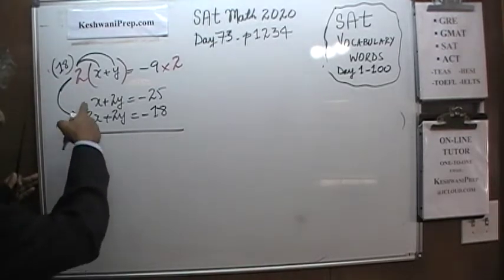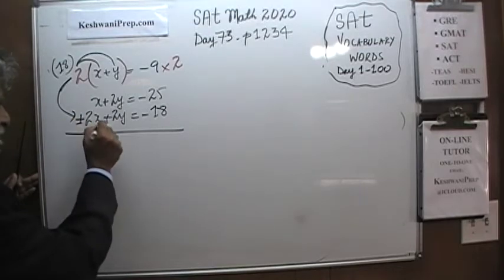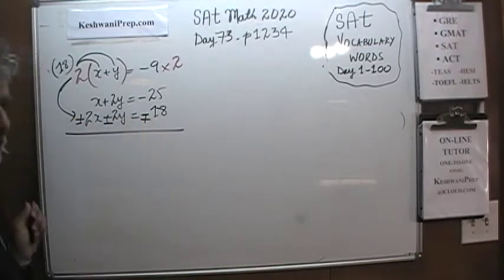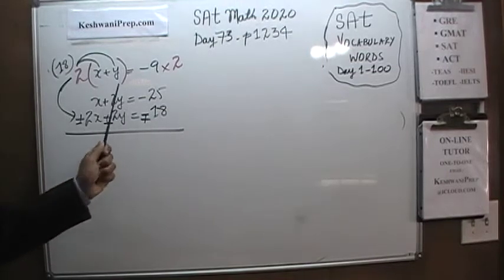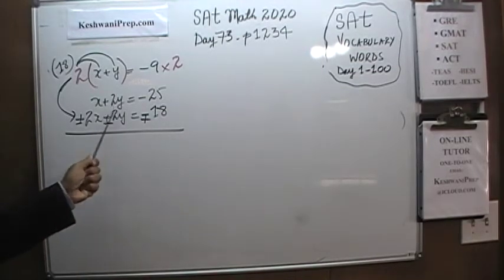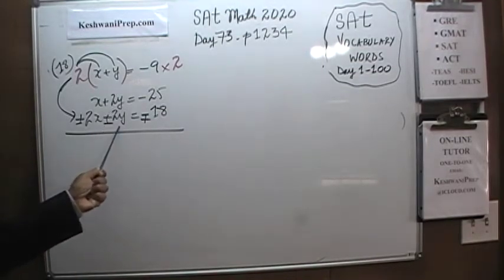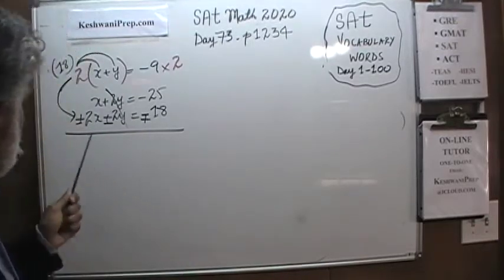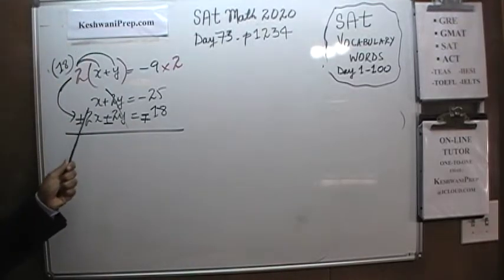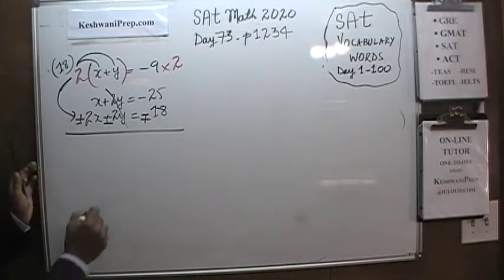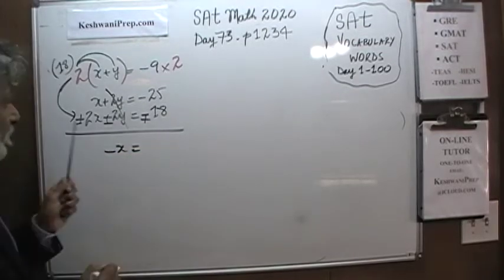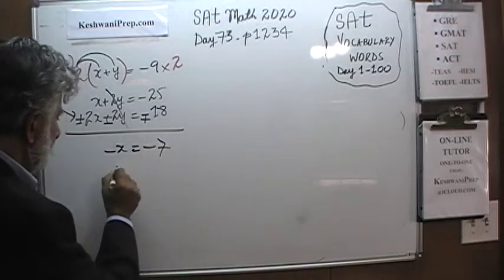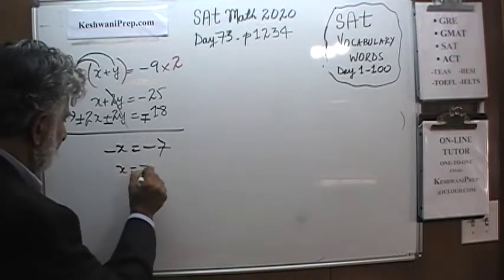Let's subtract this equation from that equation. This becomes negative, and this negative is going to become positive, because we are subtracting this equation from the top equation. Positive 2y and negative 2y will drop out — which was the whole point. Now we have x minus 2x, which gives us negative x. And negative 25 plus positive 18 gives us negative 7, which implies that x must be positive 7.